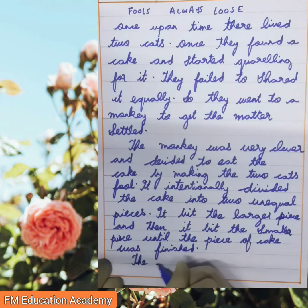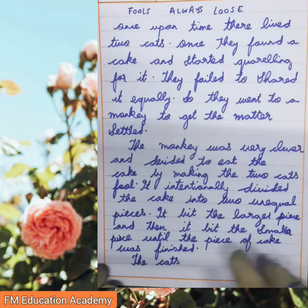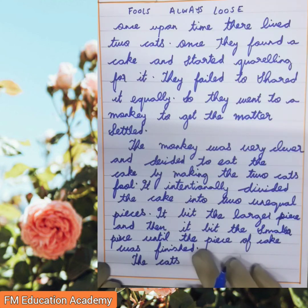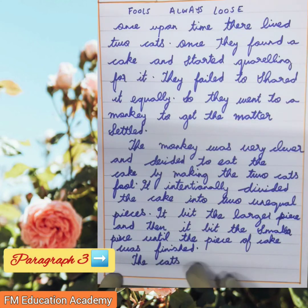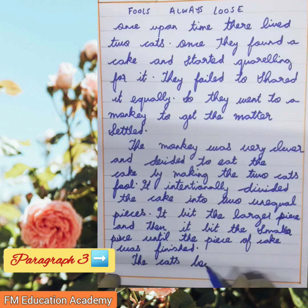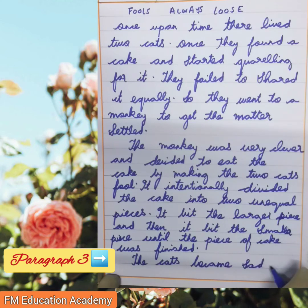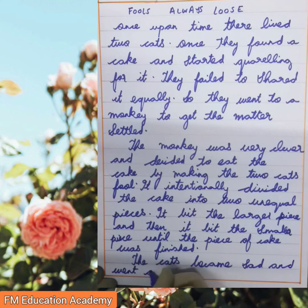The cats became sad. Since the cake was finished and the monkey had eaten the full cake, the paragraph will change. In the third paragraph, we write about the cats: the cats became sad and went away disappointed. This finishes our story of the two cats and the monkey and how he fooled them.